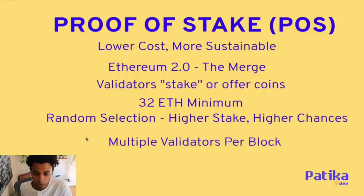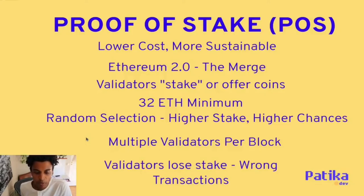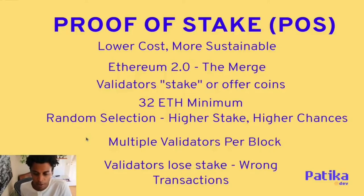You can actually have multiple validators per block, which is quite different from proof of work. Trust is enforced because if a validator commits a fraudulent transaction, they lose the stake they placed — potentially the full 32 ETH or more if they staked more. This gives validators strong incentives not to include fraudulent transactions.